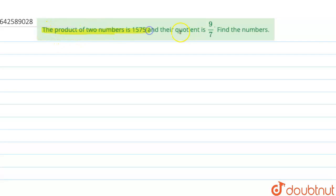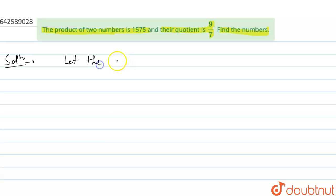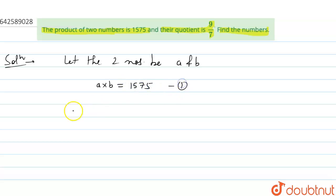The product of two numbers is 1575 and their ratio is 9 by 7. Find the numbers. Let the two numbers be a and b. Therefore, the product of the two numbers: a multiplied by b equals 1575 — this is the first equation. The second equation is their ratio: a divided by b equals 9 by 7.